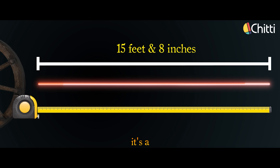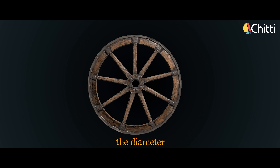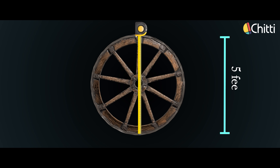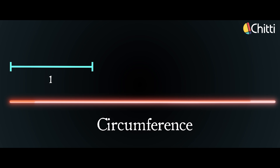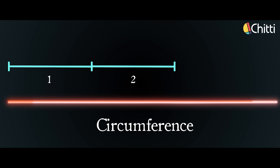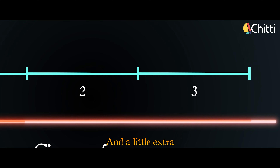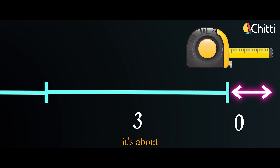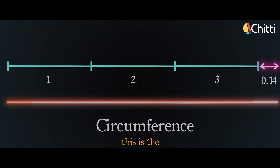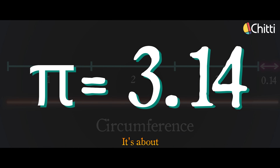To be precise, it's 478.54 cm. Then I measured the diameter of the wheel — it was 5 feet, or 152.4 cm. My tata explained: if we take this diameter and see how many times it fits along the wheel's circumference — 1, 2, 3 and a little extra. If we measure that little extra, it's about 0.14. This is the value of pi — it's about 3.14.